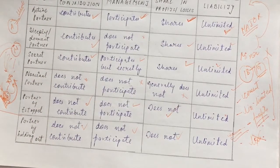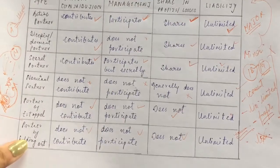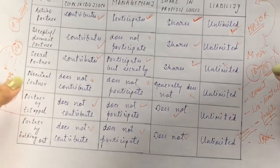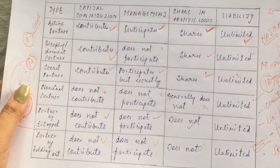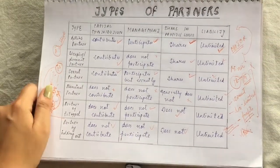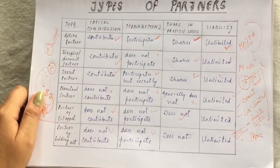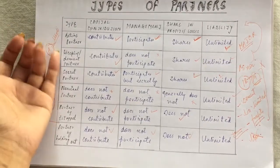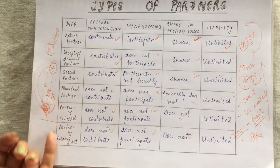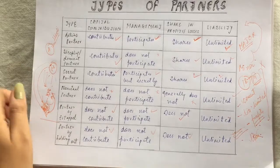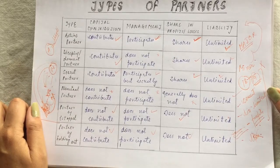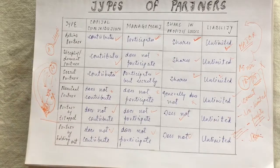So that was all about today's video. To review: today we studied the types of partners, which are important — active, sleeping, secret, nominal, partner by estoppel, and partner by holding out, as well as minor as a partner. I hope you all understand. Thank you so much for watching the video. May God bless you and bye bye.